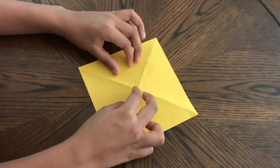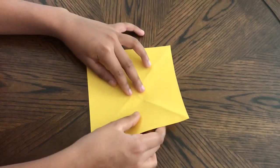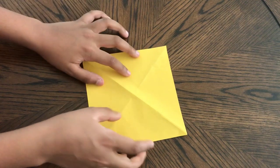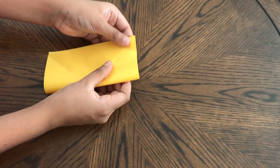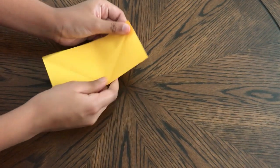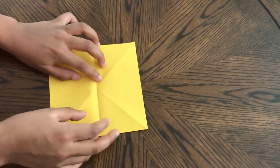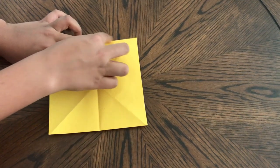Now turn it around and you're going to fold in half so that this edge lines up with this edge. Unfold it, turn it around and repeat so that this edge lines up with that edge.